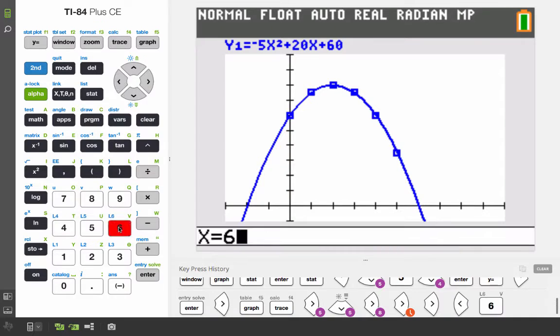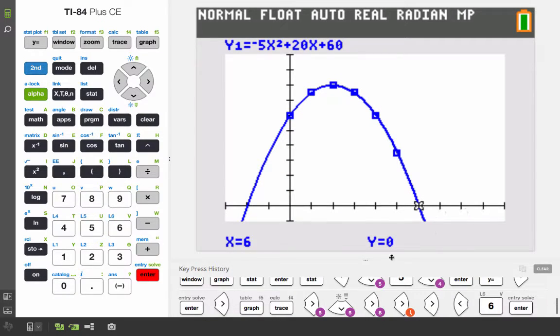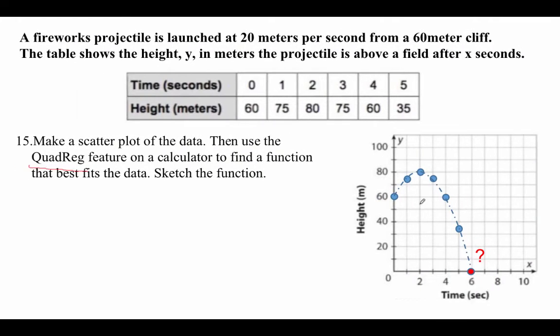Then x equal to 6, and y equal to 0. Now we're sure that the projectile will hit the x-axis when x equal to 6. So coming back here, now that I'm sure of that, I write down the answer. And there you go.